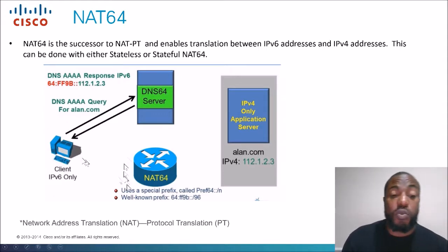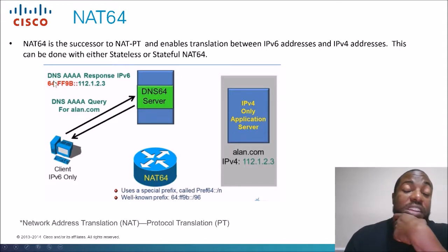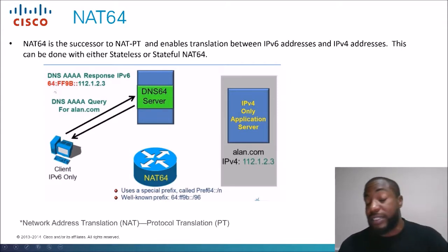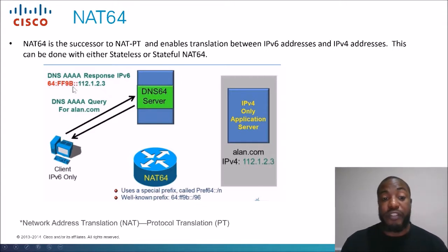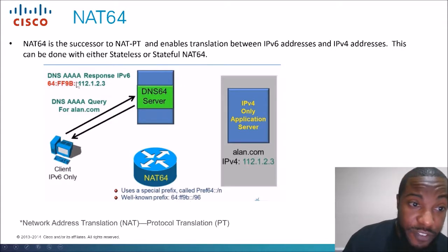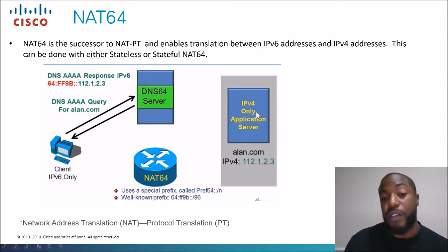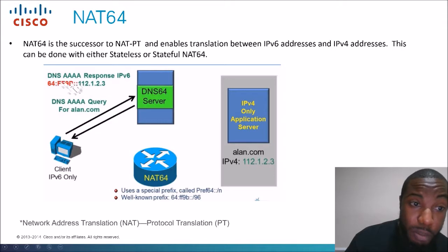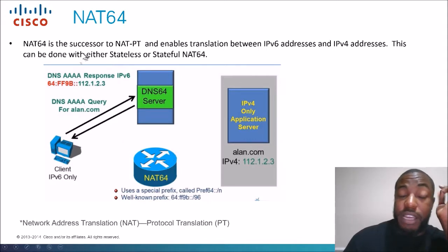An IPv6 client uses what's known as a well-known prefix to get out to the internet. That address is 64:FF9B — you may need to memorize this for the exam. The full format is 64:FF9B::, followed by whatever the IPv4 address of the site is. So that prefix — 64:FF9B — is the well-known prefix used with NAT64, also called a PREF64 prefix, and the IPv4 address forms the suffix. That may come up on the exam.